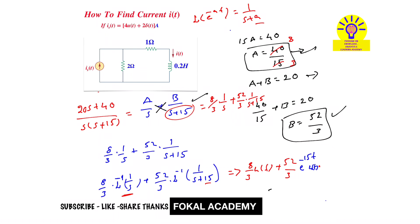So it becomes 2.667 plus 17.333 e power minus 15 T times U of T. So this is the current I of T in amperes. This is the required current for the given problem and this is the process of simplification. Thanks for watching, please subscribe, like, share. Thanks.